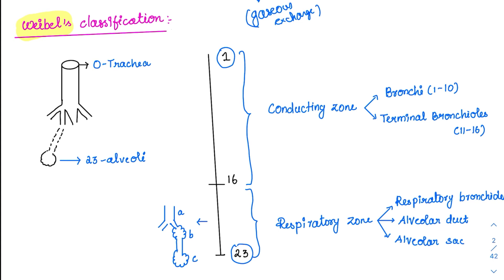Weibel's classification has two predominant zones: the conducting zone and the respiratory zone. The conducting zone is just conducting the air and includes the first 16 divisions. This conducting zone is further divided into bronchi and terminal bronchioles — the first 10 divisions are the bronchi and the next 11 to 16 are the terminal bronchioles. The conducting zone ends at the level of terminal bronchioles.